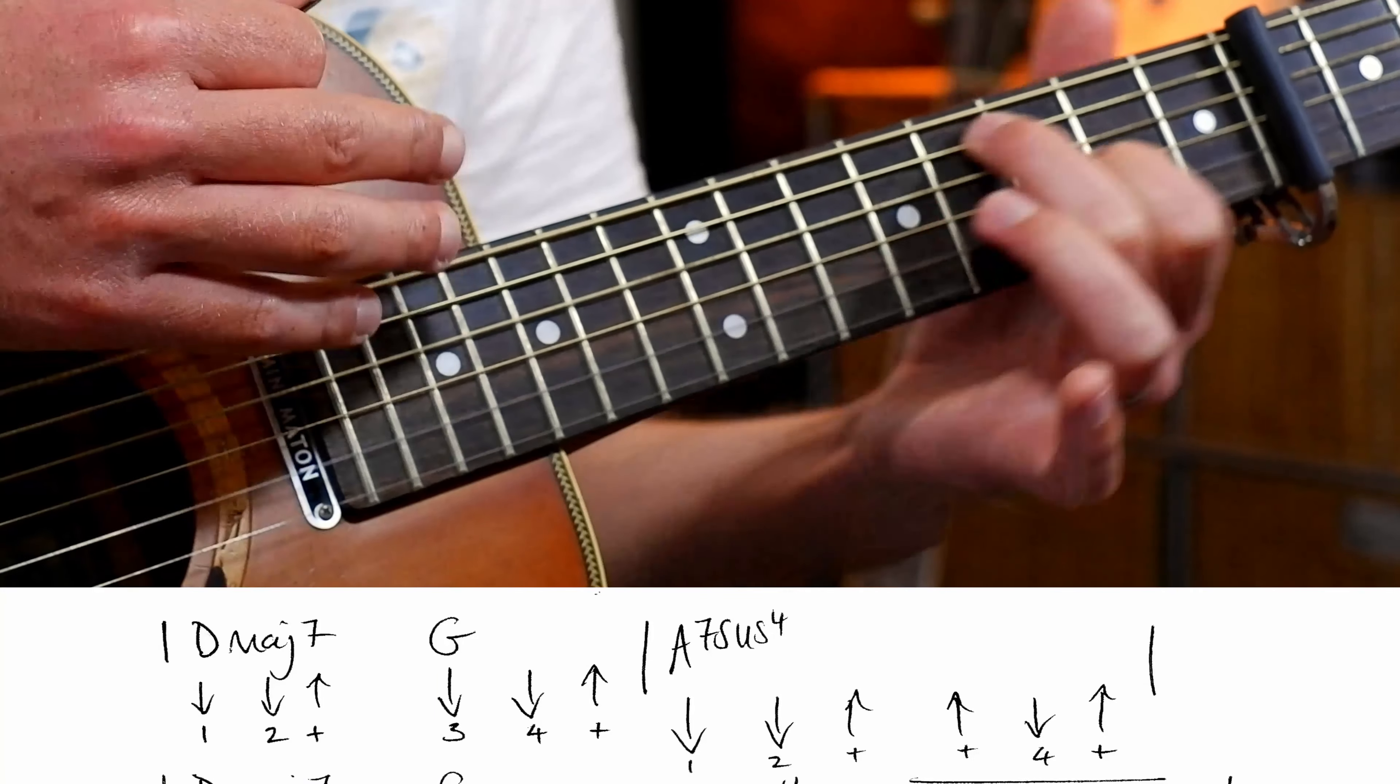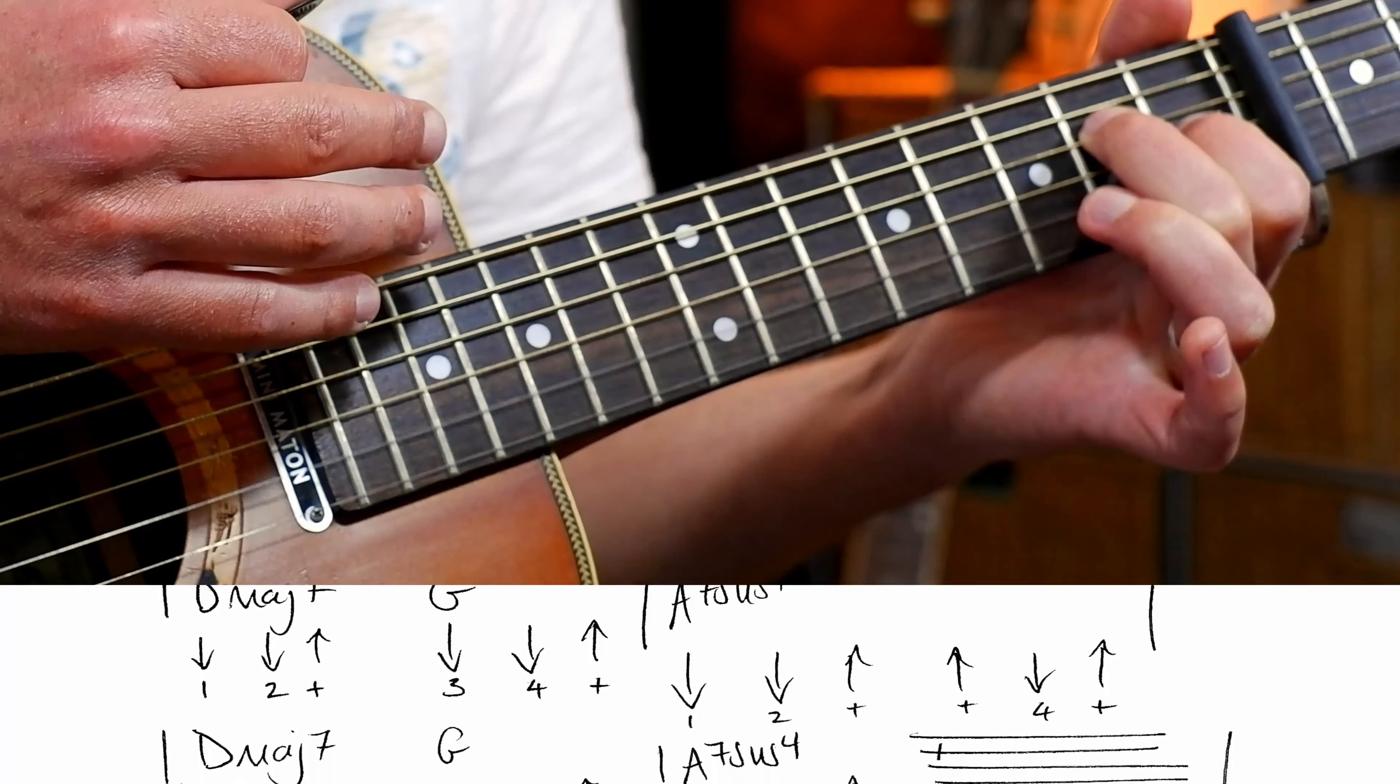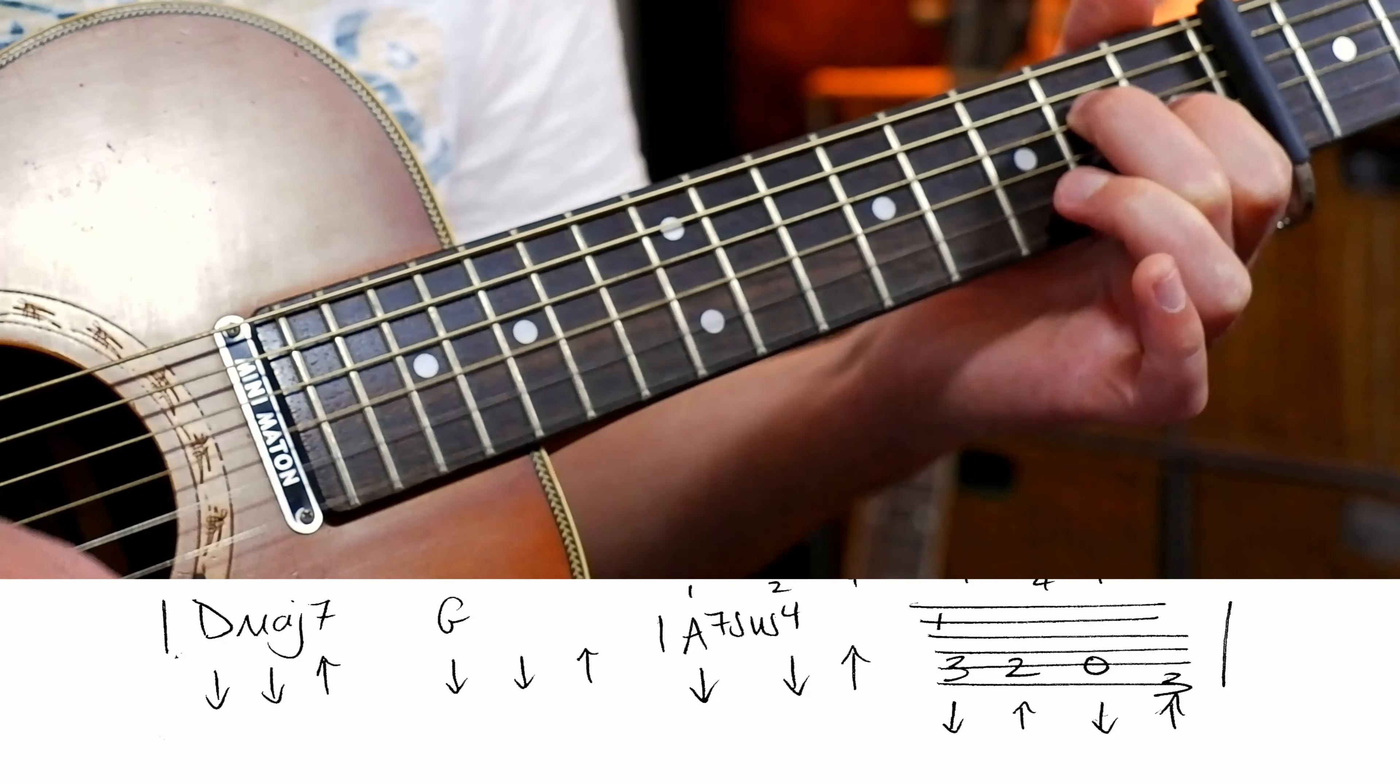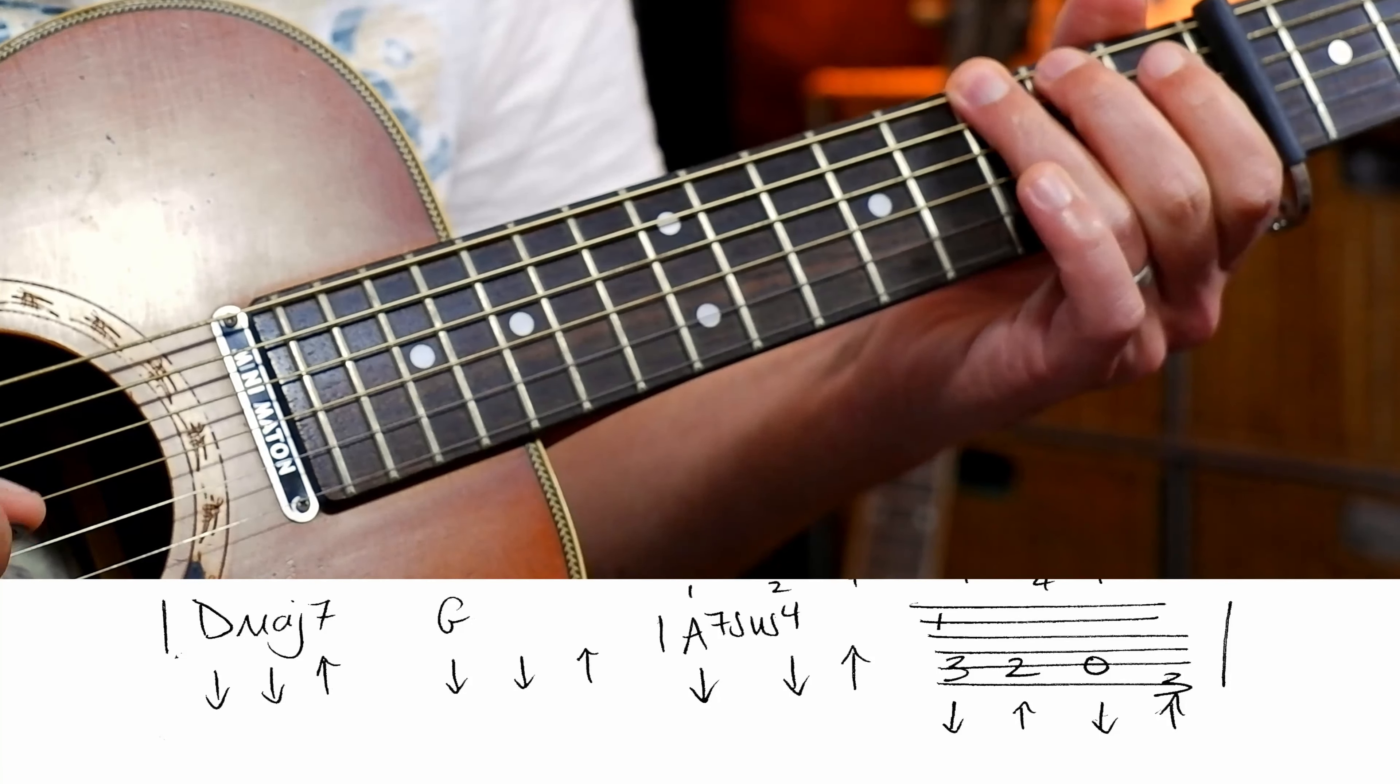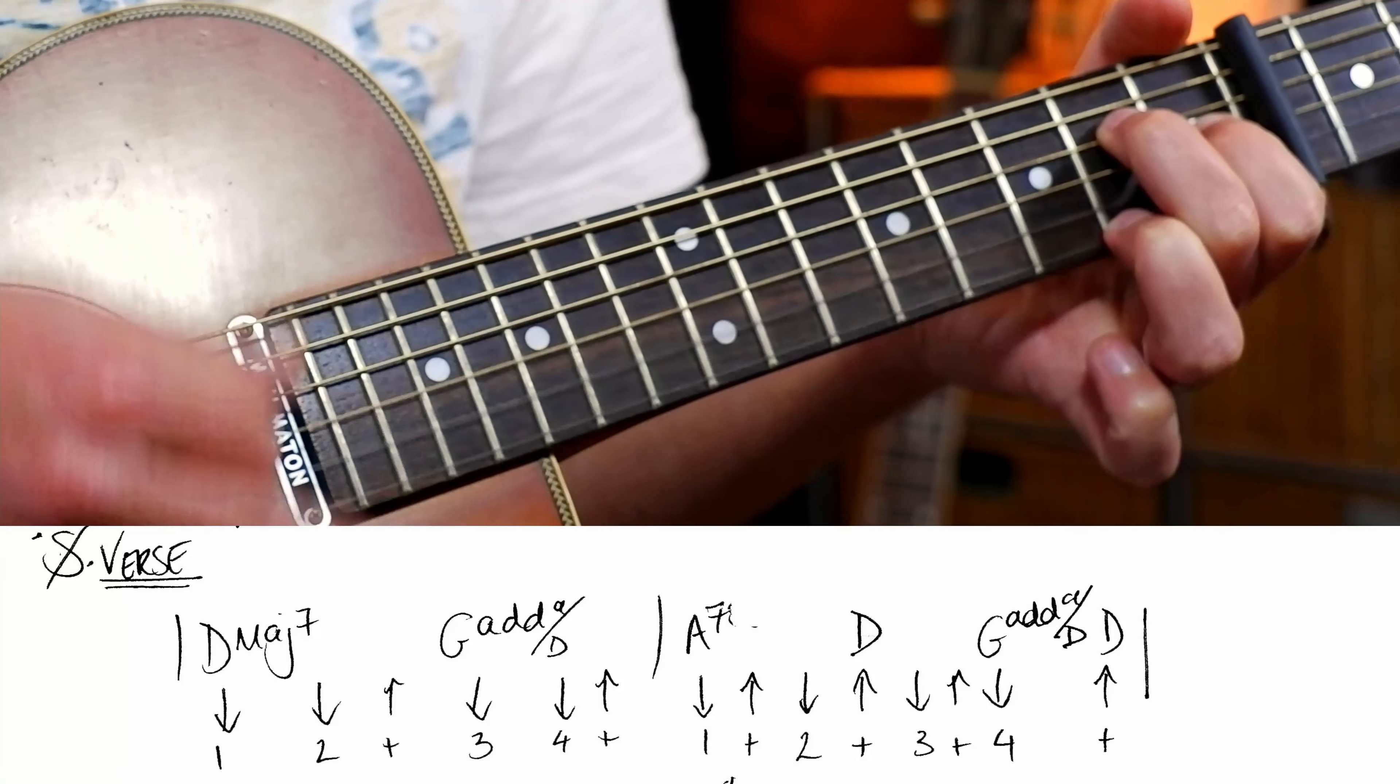Okay, and then the 7th and 8th bars of the verse are almost identical. And then we've got a small riff. 3, 2, open, 3, bluesy. Okay, so let's have a go at the verse together. We've got D major 7. 3, 2, open, 3.